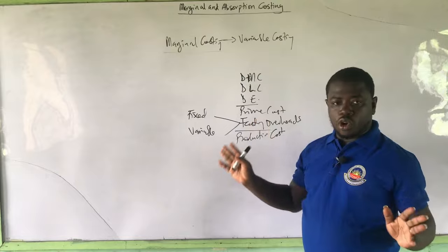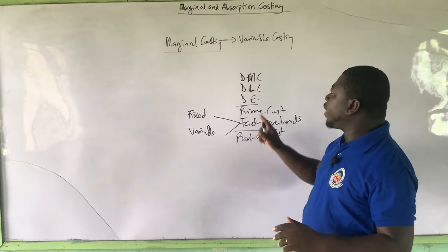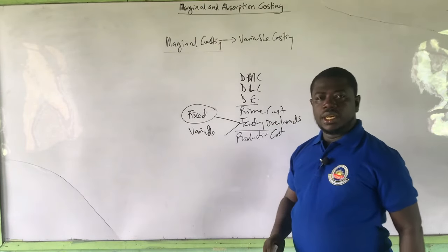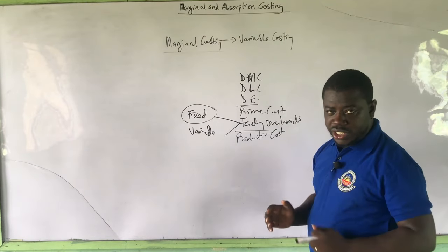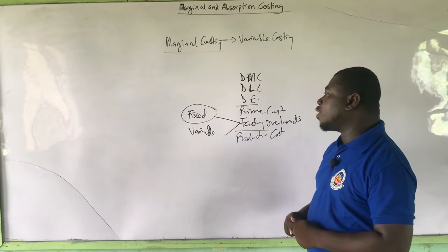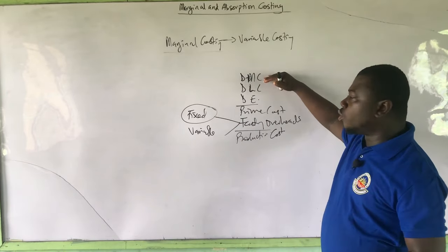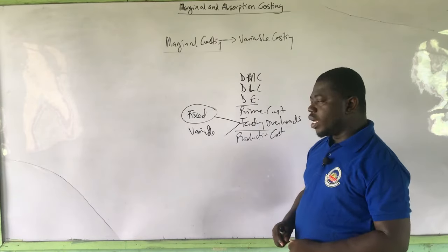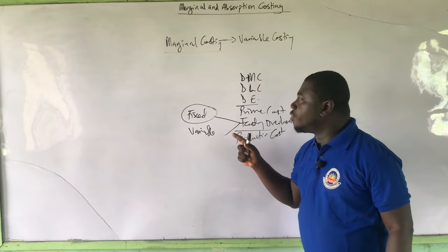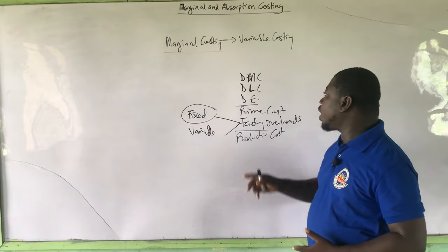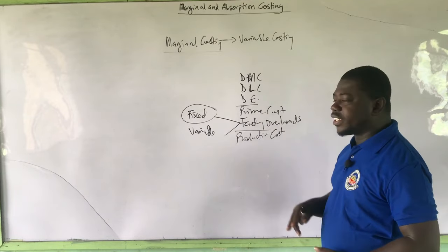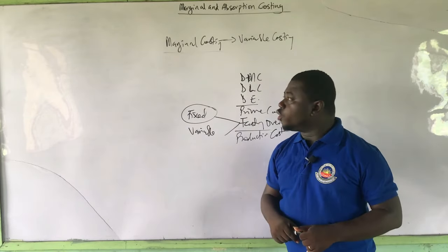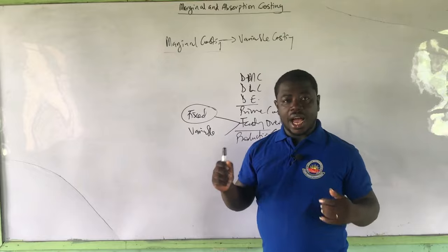Absorption costing is the full costing approach — they do not discriminate. But when it comes to marginal costing, marginal costing is saying that it will not include the fixed production cost in the valuation of closing inventory for the purpose of profit calculation. Direct material cost, direct labor cost, direct expenses — all the elements of the prime cost are assumed to be variable. Direct material cost is a variable cost in its nature, direct labor cost is a variable cost, and direct expense is also a variable cost. All these vary directly with the units produced. That is why prime costs in nature are variable costs.